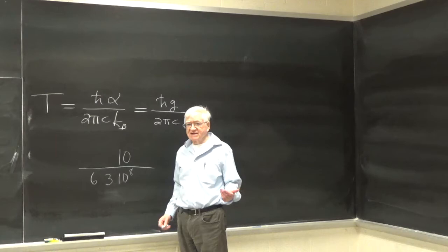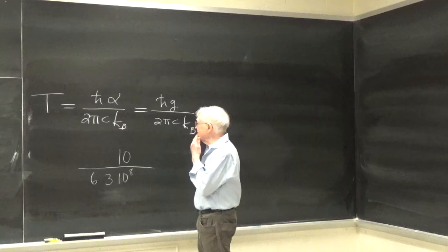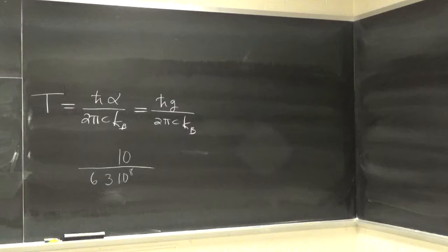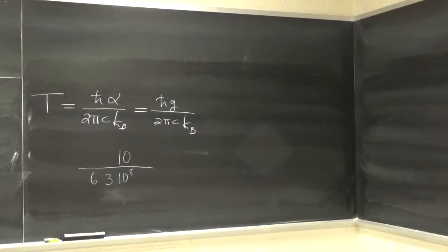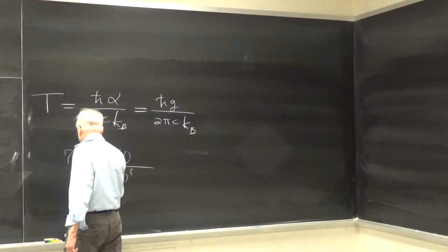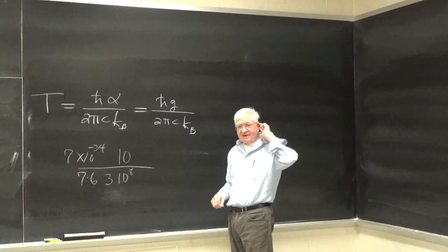ℏ is Planck's constant divided by 2π in MKS. H is 6.62 times 10 to the minus 34 joules per second — that's h, not ℏ — divide that by 2π, so just drop the 6, making ℏ roughly 10 to the minus 34. And k_B is 1.38 times 10 to the minus 23.